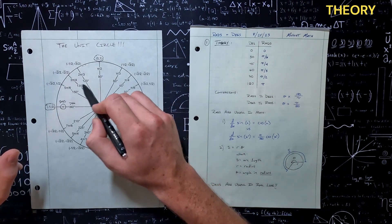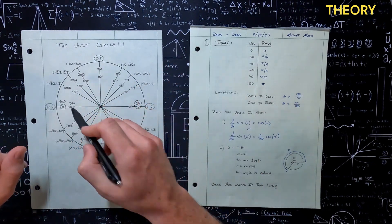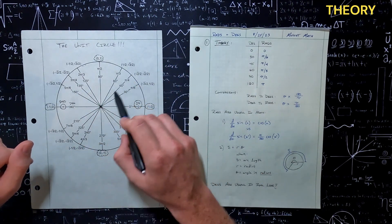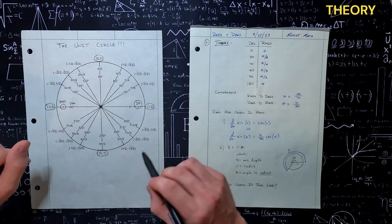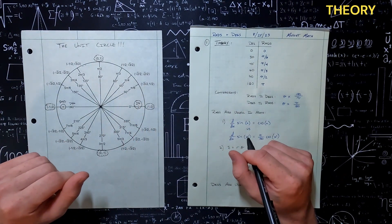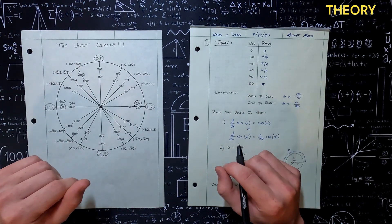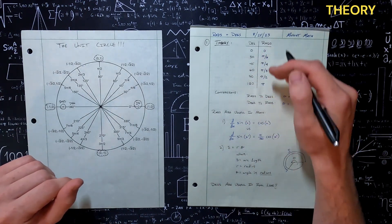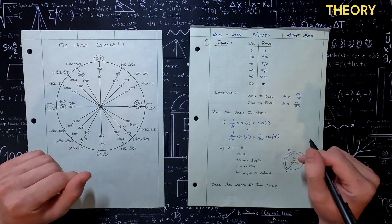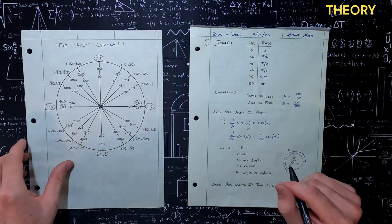And continuing on: if we have pi over 4 at 45 degrees, well it takes 45, 90, 135, 180 — four of those to get to 180 degrees. So it's just going to be pi divided by 4. I just kind of wanted to give us a table of set values of what we know, at least theoretically — we haven't proven it yet, but that's what we're given.